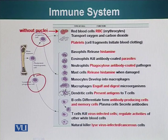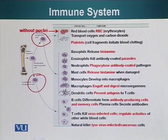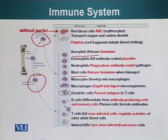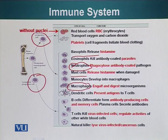Myeloid progenitor cells give rise to two groups of cells. One group does not have any nucleus and is composed basically of red blood cells, which give our blood its red color because they contain iron — iron is required to carry oxygen to different parts of the body. Platelet cells are actually fragments of a cell and they initiate blood clotting. The other group, the white blood cells, includes basophil cells and mast cells, which both contain and release histamine when required. Eosinophil cells kill antibody-coated parasites. Neutrophils and macrophages engulf and digest microorganisms or pathogens. Macrophages develop from monocytes.